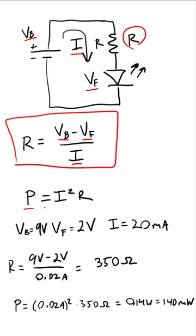However, you also need to use the equation P equals I squared R to check the power dissipated by the resistor and make sure it does not exceed the resistor's power rating.